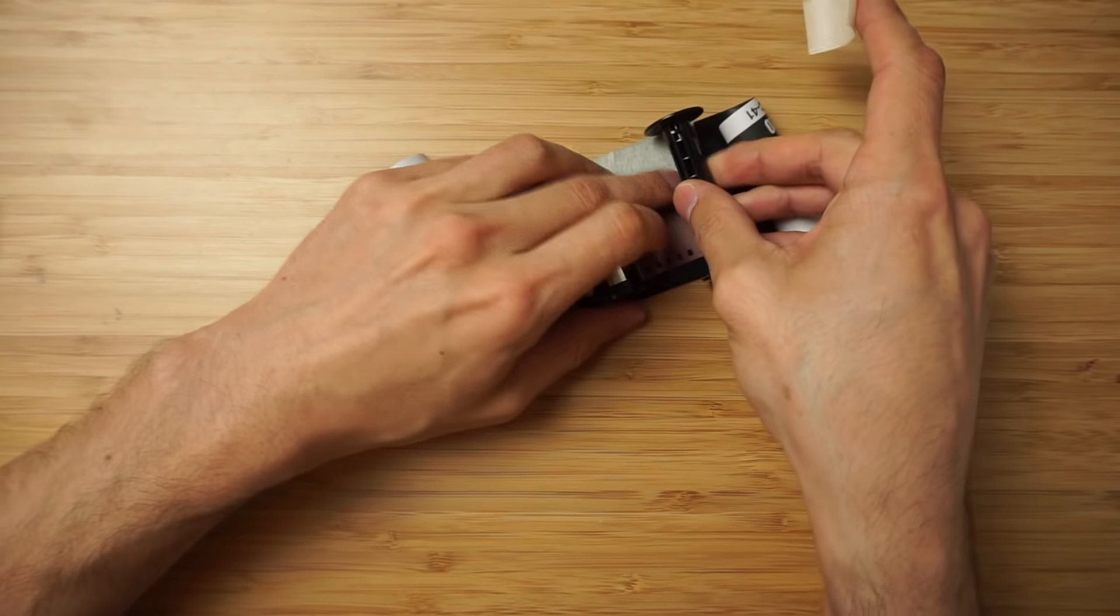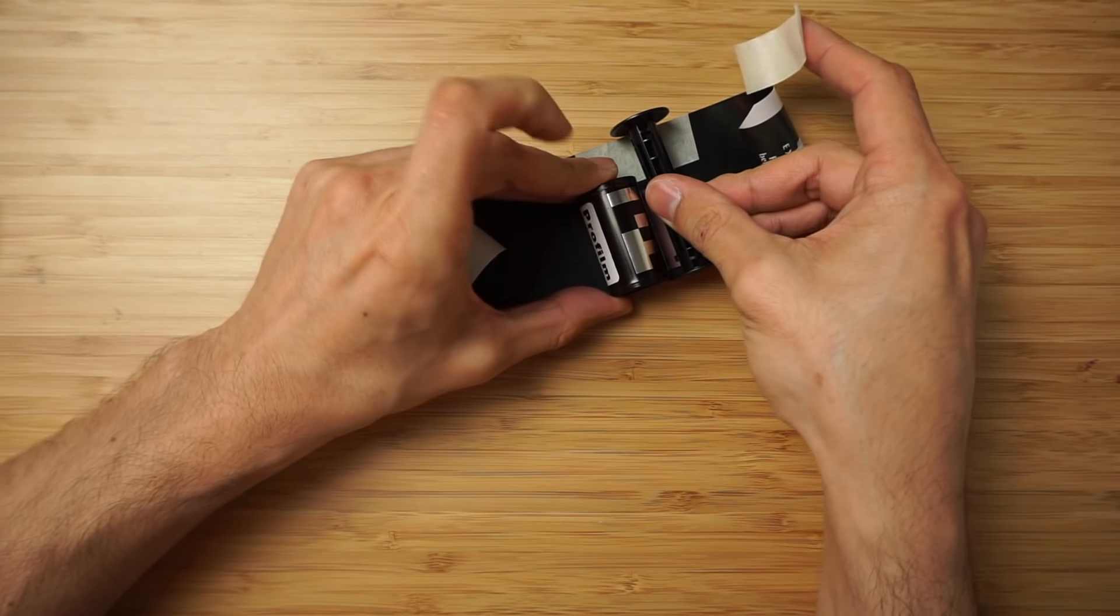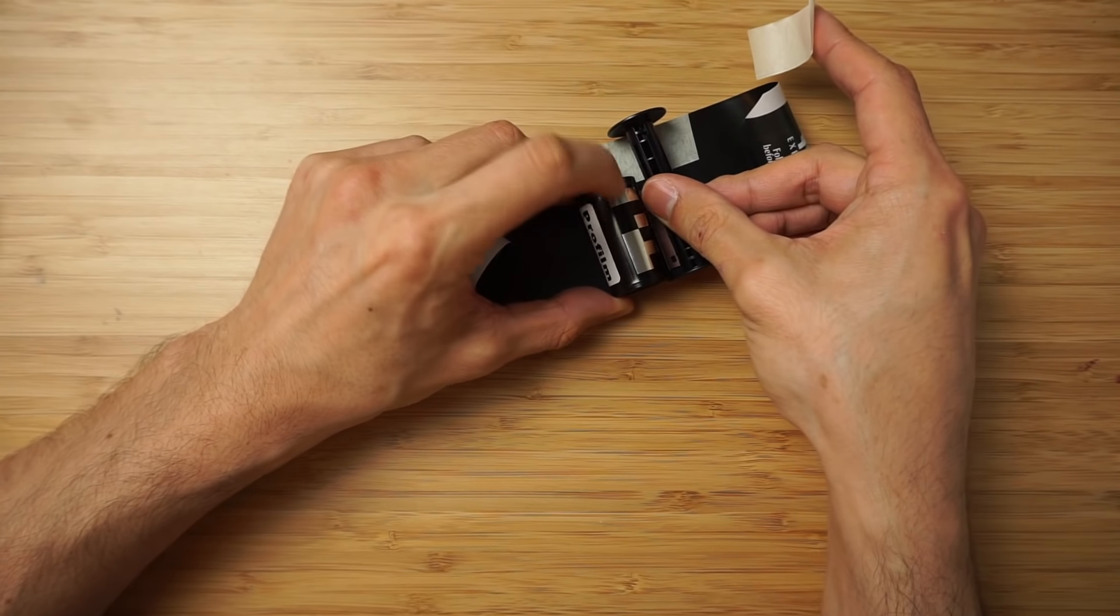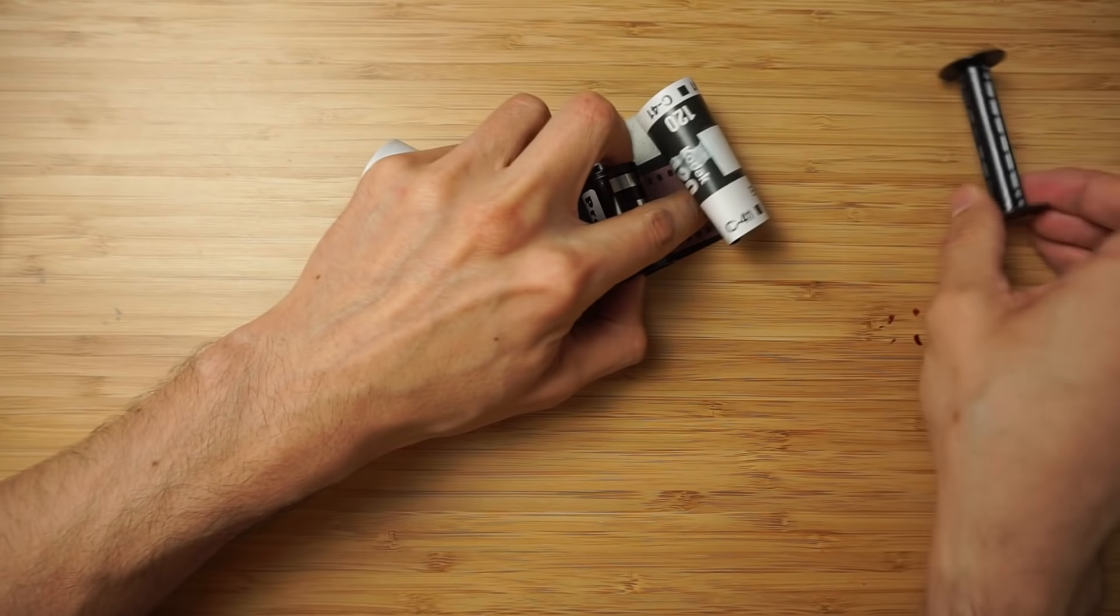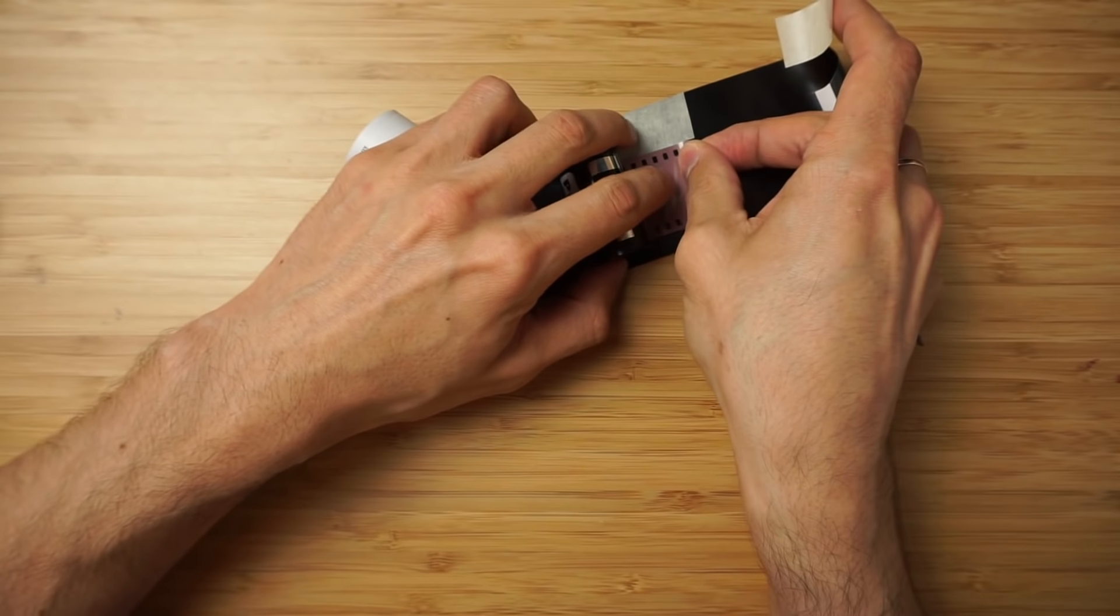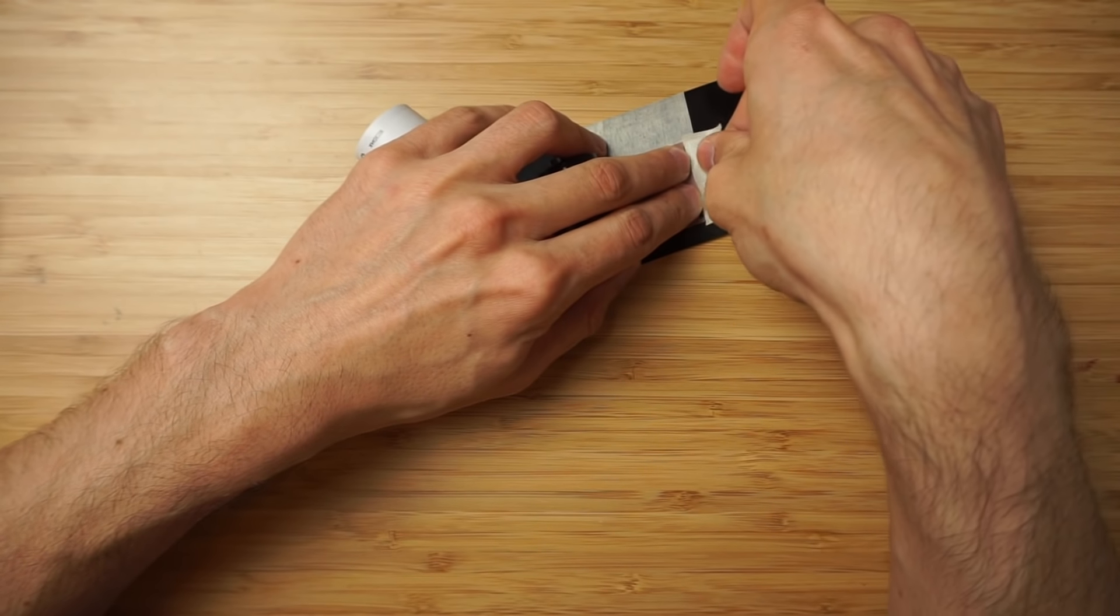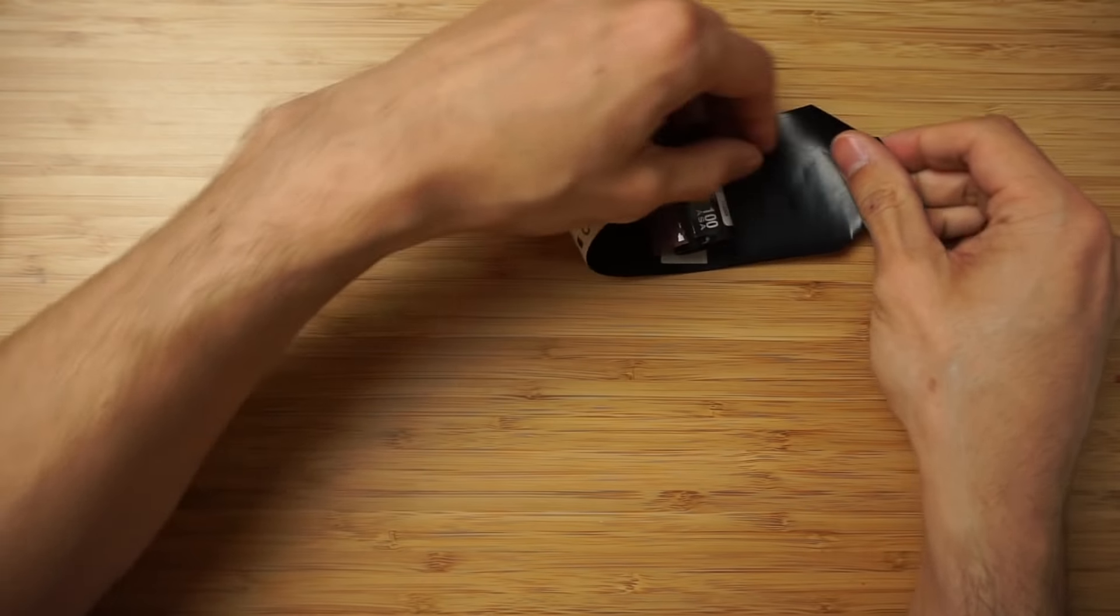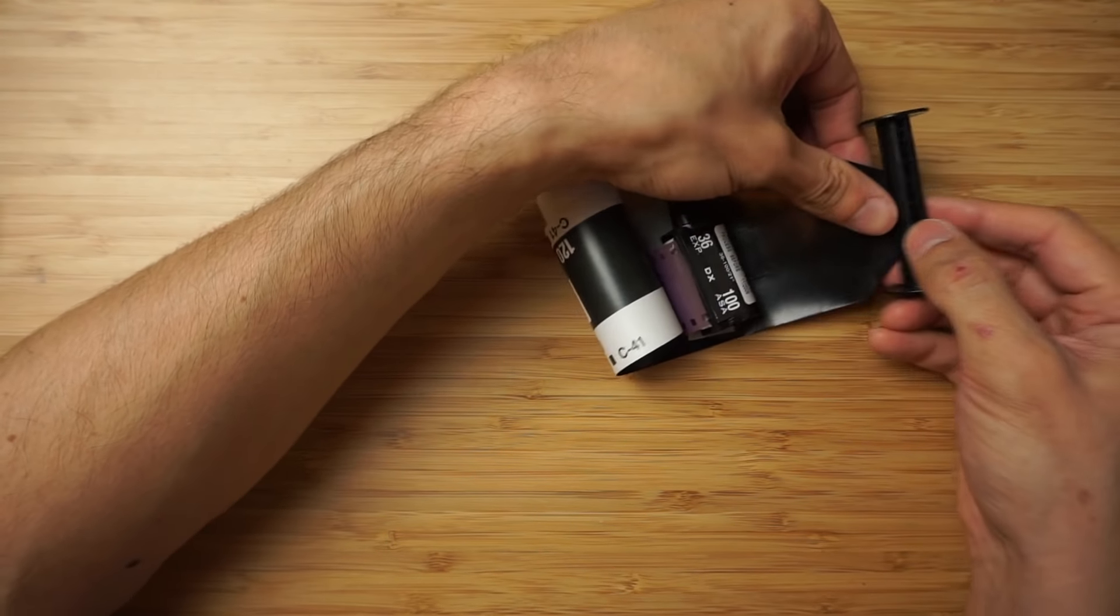If you measure it right at the bottom, you put your film a few millimeters from the bottom so you can actually measure your film by the taking spool. But if you're in a more complicated situation like me, then you just put a little bit more sticky tape and then you start winding your film.